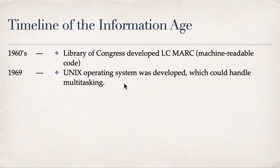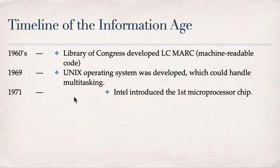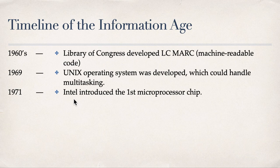Two years later in 1971, Intel produced the first ever microchip. Intel, which we still know today, supplies microchips — that's why we have Intel Core i3, i5, i7, and i9 processors.